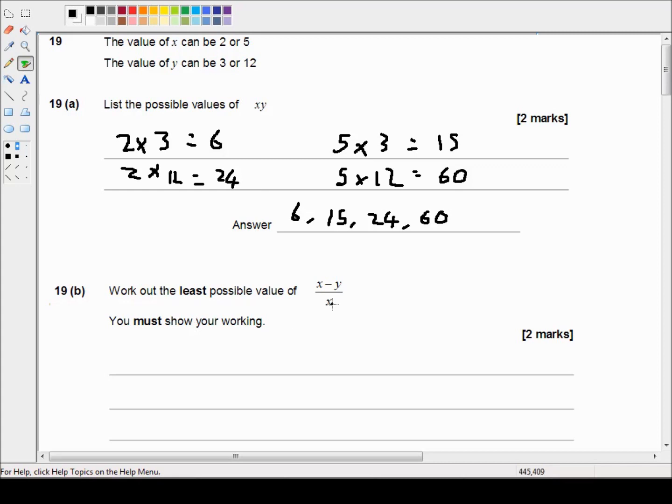So it might be tempting to put the biggest value for x in because we've got x on the bottom and that might give us a nice small fraction. But if we use the smallest value for x and the largest value for y, it's going to give us a large negative number which is the lowest possible value for this whole expression here.